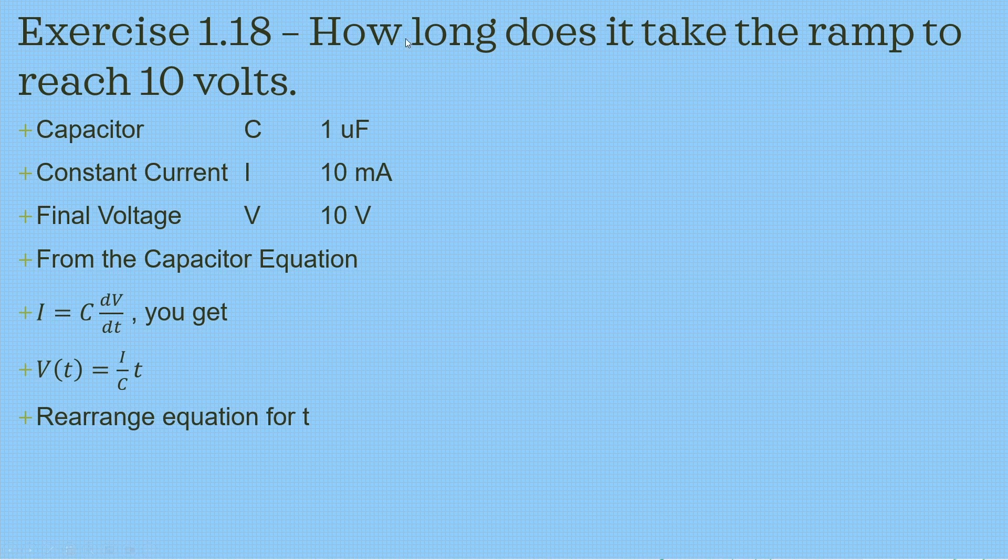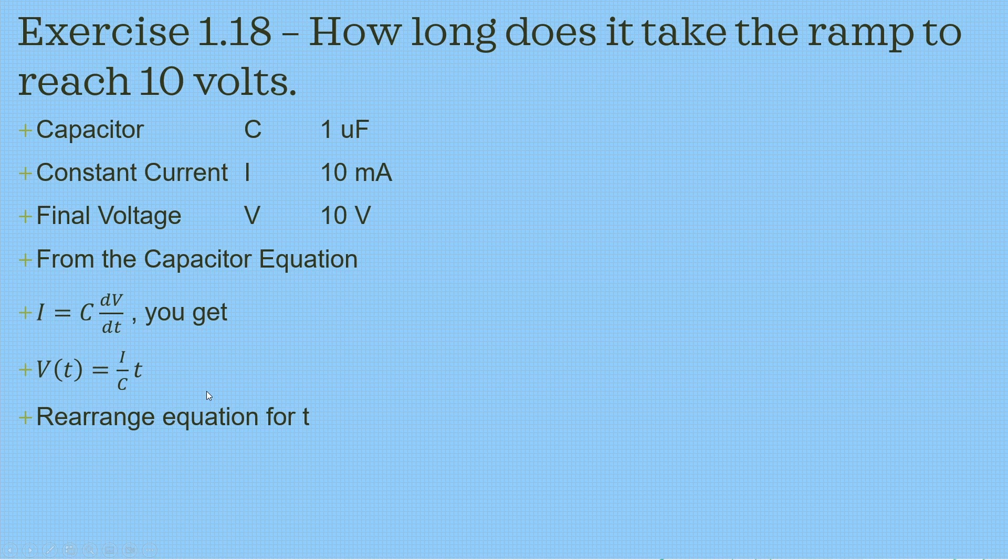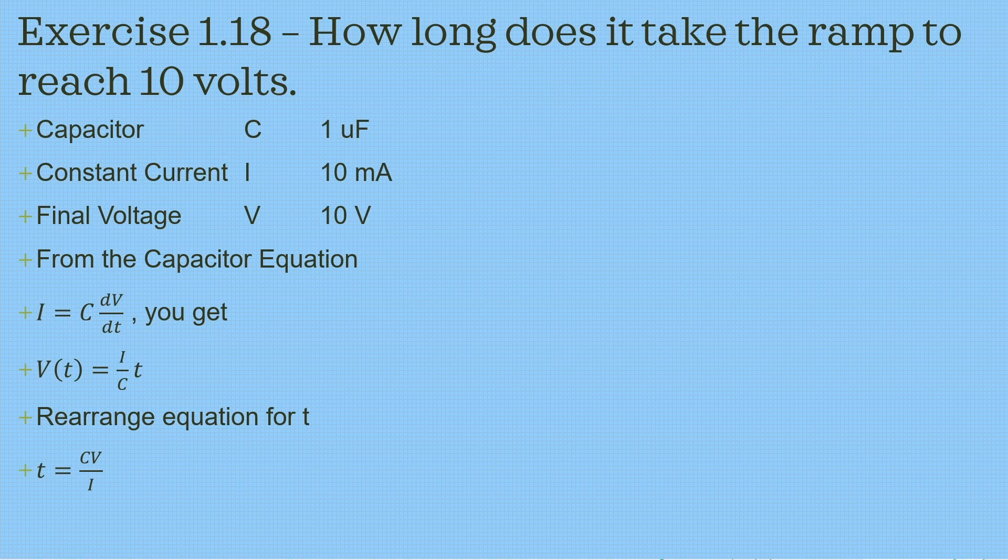Now, if we rearrange this equation here to get T by itself, we get T equals C times V over I.